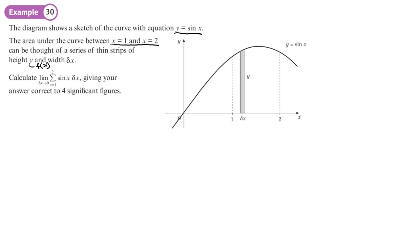Calculate, and I'll write this out here, the limit as delta X or the width tends to zero of the sum of these strips between one and two of sine X times by delta X. Now we just need to know what does that mean?